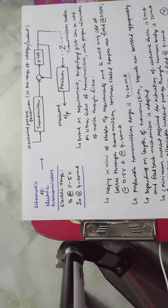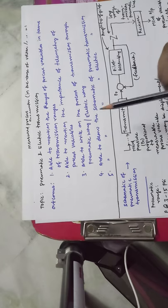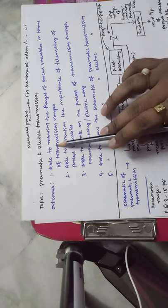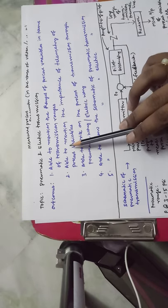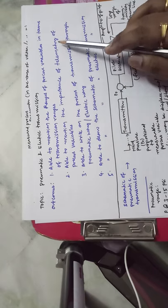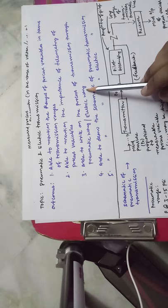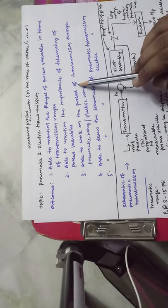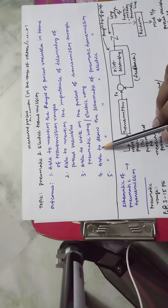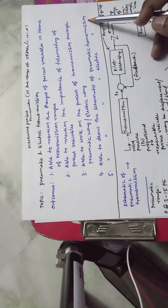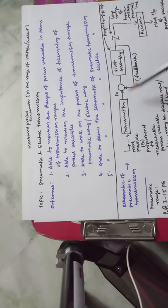To recap the outcomes: after this lecture, you must be able to mention the range of process variables in terms of transmission range — pneumatic, electrical, current, and voltage. You must be able to mention the importance of telemetry of process variables, write on the process of transmission through pneumatic or electrical means, draw the schematic of pneumatic transmission, and draw the schematic of electric transmission.